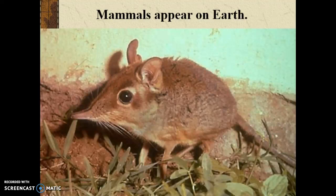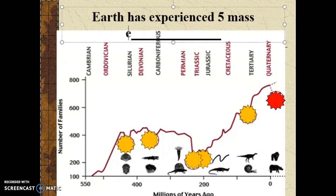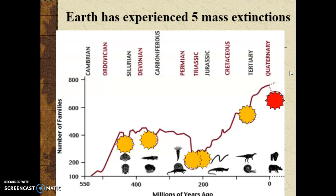Mass extinctions knock diversity back, but then it rebounds and flourishes as life keeps evolving and adapting — that's what the fossil record shows us. The Earth has had five mass extinctions. Each yellow symbol on the chart represents one of those. Our concern is the red one: that's the sixth mass extinction we're moving into, which we discussed during ecology and conservation biology. The concern is what's going to happen to our species as we continue into the sixth mass extinction — and this one is being driven by human actions.